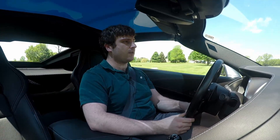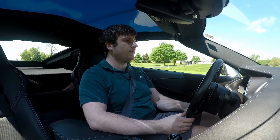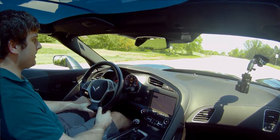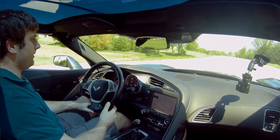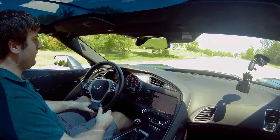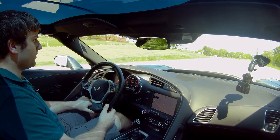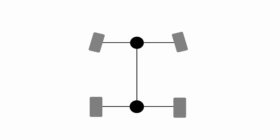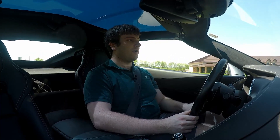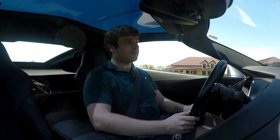I thought I'd talk about toe angle. Toe angle is just the angle at which a set of tires are pointing relative to each other. Toe in means that both tires are pointed towards each other, and toe out means the tires are pointed away from each other. So what does toe in and toe out actually give us?